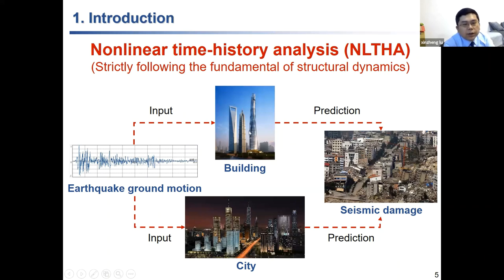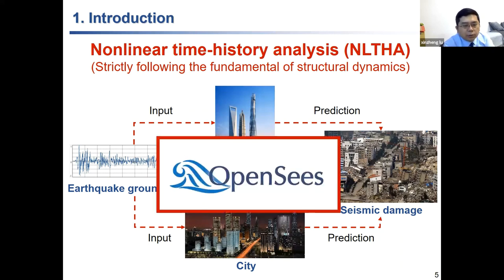We input ground motions into buildings to know what happens when an earthquake occurs. We can use the same idea — input ground motion into a structural dynamics model of a city — to predict seismic damage to the city. The upper approach is nonlinear time history analysis of a single building; the bottom one is nonlinear time history analysis at city scale. This is what we call multi-scale simulation, and we want to bring all these different scale simulations into OpenSees.